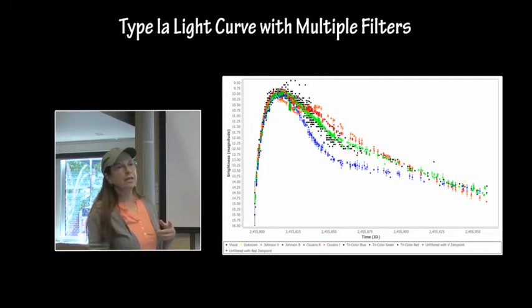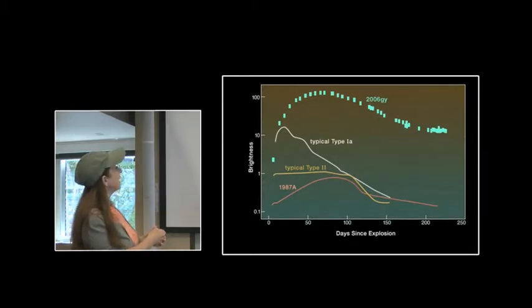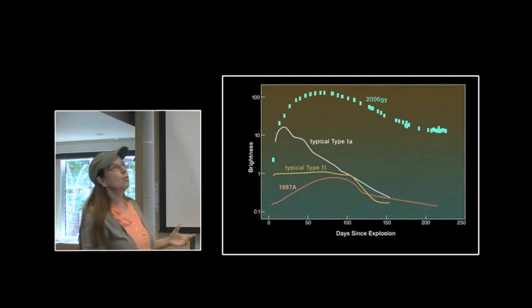It also looks very different if you're looking at it in x-ray or optical or ultraviolet. Here is a typical 1a light curve, here is a typical 2a light curve, and here is an enormous light curve from 2006 GY.